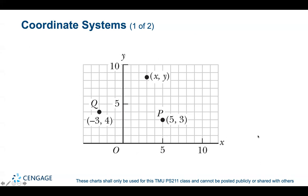Another topic we'll deal with is coordinate systems. In an XY Cartesian coordinate system, x is positive going right and y is positive going up. A point like (5, 3) is described by an ordered pair giving its x and y values, which can be plotted on graph paper.